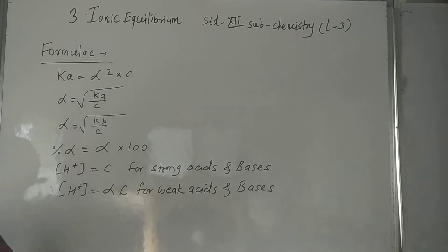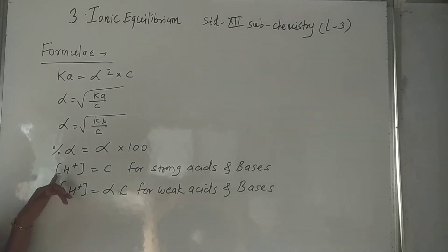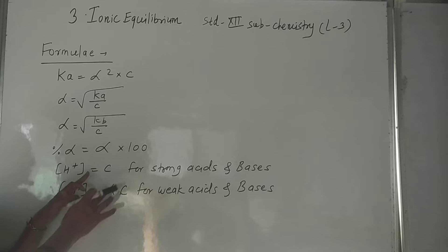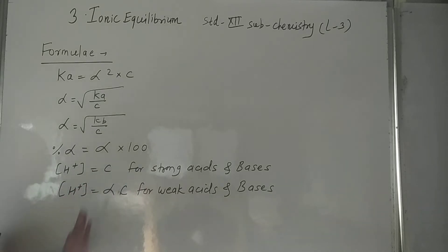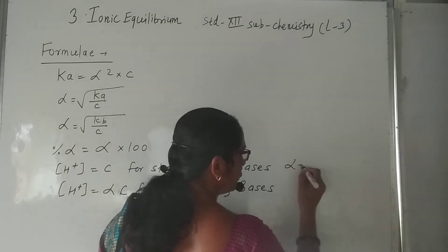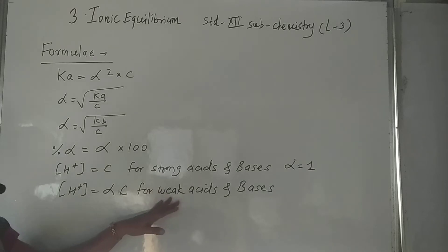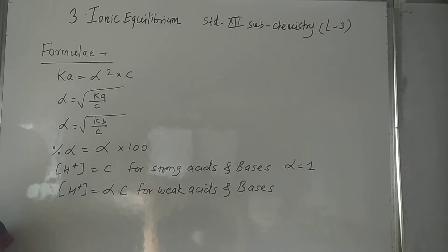In the case of strong acids and strong bases, as they are completely dissociated, the H⁺ ion concentration equals the concentration of the solution. For example, HCl dissolved in water is completely dissociated, so [H⁺] = C, and alpha equals 1. For weak acids and weak bases, which are not completely dissociated, [H⁺] = α × C.